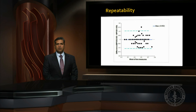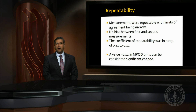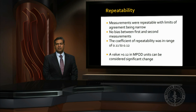Examining the repeatability using the Bland-Altman technique, we find that the limits of agreement are tight, there is no bias between the first and second measurement, and the coefficient of repeatability was in the range of 0.1 to 0.12. A value greater than 0.12 MPOD units can be considered a significant change or deviation in either direction.